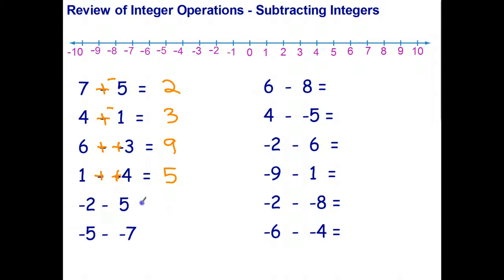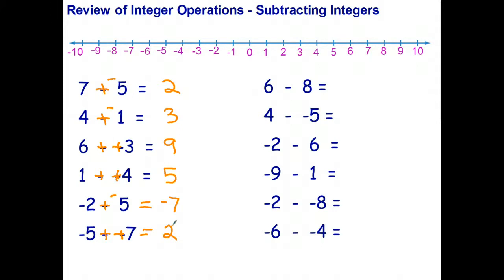One subtract negative four becomes one plus four, which is five. Negative two subtract five becomes negative two plus negative five, which gives negative seven. The last one: subtracting negative seven — subtract becomes plus, negative seven becomes positive seven. That's seven dollars in my pocket plus a bill for five dollars — I pay off the bill and still have two dollars left. Stop the video and try the six questions on the right.